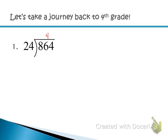Then multiply down: 4 times 4 is 16, carry the 1; 4 times 2 is 8, plus 1 is 9, so 96. That's too big — we don't want to go above 86. So back it down to 3. Now 3 times 4 is 12, 3 times 2 is 6, plus 1 is 7, giving us 72. Subtract: you get 14. Then bring down the 4.